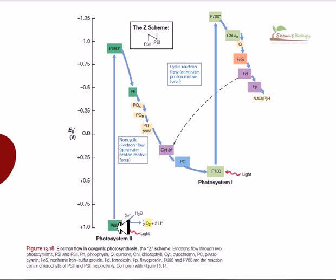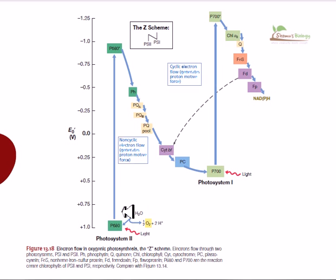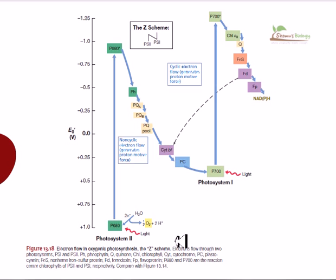Photosystem II is excited by 680 nanometer wavelength of light, and photosystem I can be excited by 700 nanometer wavelength of light. Photosystem II is placed at the start of the reaction and photosystem I is in the second position. The naming happened after discovery, which is why photosystem II comes first in the reaction sequence.